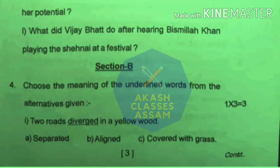In section B, some sentences are given, and in those sentences a word is underlined. You have to choose the meaning of the underlined words, for which some alternatives are also given.